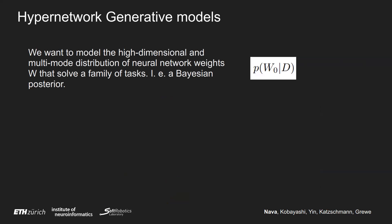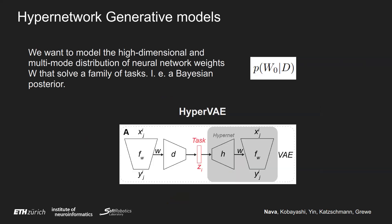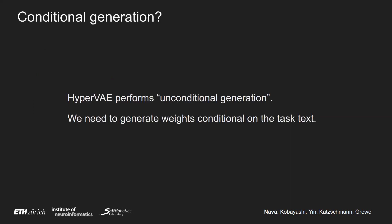We want to model a high-dimensional multi-modal distribution of neural network weights that solve a family of tasks. This could be a Bayesian posterior over these neural network weights, but in practice we don't need to formalize it as such. What we introduce in the first half of our work is a HyperVAE — a VAE over neural network weights of our entire task universe. This VAE is not conditional; it will model neural network weights independently of what the task is. Given the latent Z, our generator can produce the entire weights for our neural network. However, we are not really interested in unconditional generation; we want to perform conditional generation, and we investigate several techniques to perform this optimally.